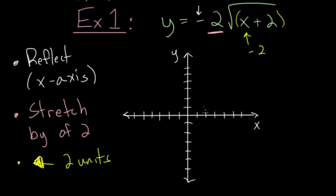I'll quickly sketch the parent function and then apply the transformations to key points. Looking at the boundary point at the origin: reflecting about the x-axis doesn't move it since it's on the line of reflection. Stretching by 2 doesn't affect it either since the y value is 0. So this particular transformation doesn't affect the origin, though it will affect every other point.